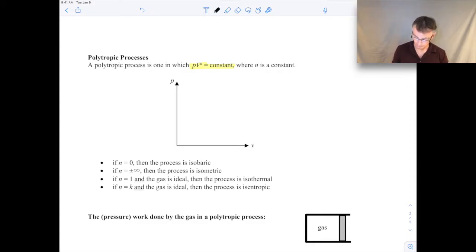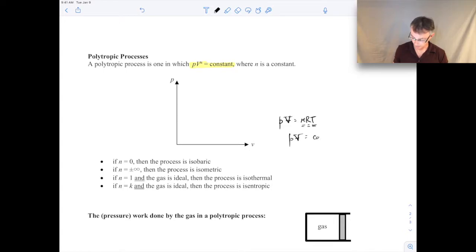So for example, if you're dealing with the ideal gas law, PV equals MRT. If you're dealing for example with an isothermal situation where the temperature is a constant, and of course the mass is a constant, and the gas constant is constant, then that's a type of polytropic process because you'd have PV is equal to a constant. Where the N here would be equal to one. The exponent N would be one. So that's an example of a polytropic process.